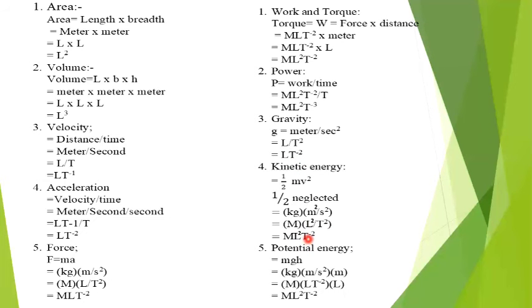Energy is kinetic or potential. For potential energy, the formula is mgh — m stands for mass, g is gravitational acceleration, and h is the height. Mass unit is kg, gravity unit is meter per second squared, and height unit is meter. kg symbol is M, gravity gives LT⁻², and meter is L. L into L gives L squared, so the final answer is ML²T⁻².